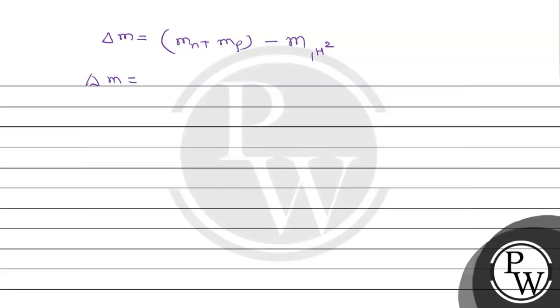Mass of neutron is 1.00898 plus mass of proton 1.00759. This is the mass for neutron and proton. Now the mass of deuterium is also given, that is 2.01470.